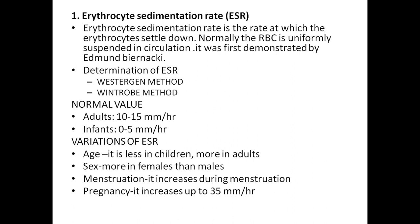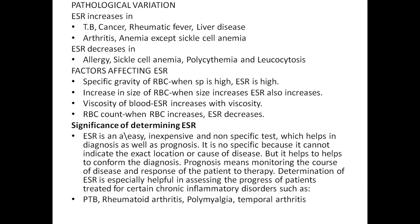In pregnancy, ESR is increased up to 35 millimeters per hour. Pathological variations include ESR increases in TB, cancer, rheumatic fever, liver disease, arthritis, and anemia — except sickle cell anemia. ESR decreases in case of allergy, sickle cell anemia, polycythemia, and leukocytosis. Factors affecting ESR include: specific gravity of RBC — when high, ESR is high; size of RBC — when size increases, ESR increases; viscosity of blood — ESR increases with viscosity; and RBC count — when RBC count increases, ESR decreases.